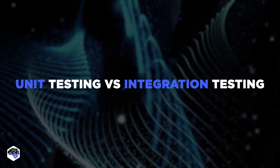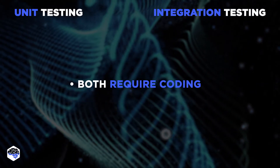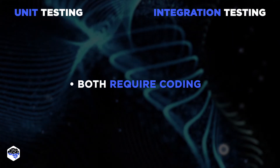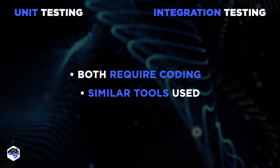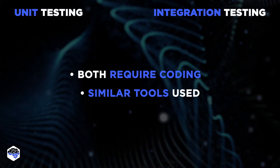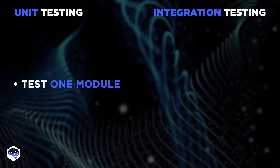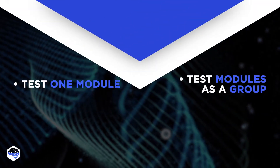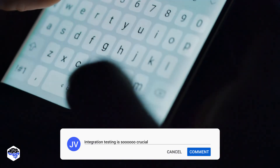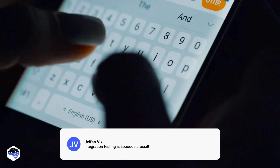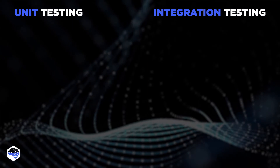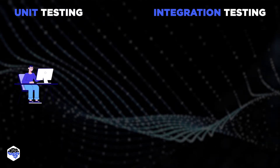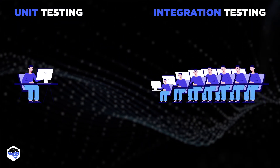Now let's compare unit testing and integration testing. Both methods require coding, in contrast to forms of testing based on screen recording, and it's possible to perform both using similar or even the same instruments. What's different? In unit testing, only a small module or piece of code is tested, but in integration testing, you test modules combined in a group. Which approach seems like a higher priority to you? Share what you think in the comments. Unit testing is also less complex than integration testing — unit testing needs just a single developer, while integration testing requires a team.